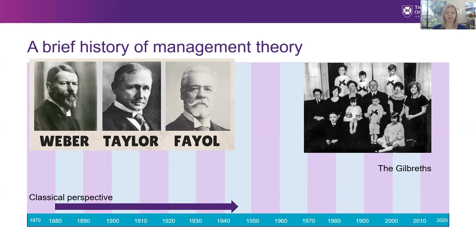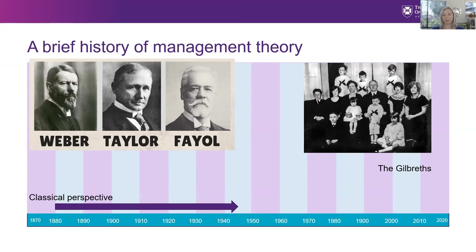Taylor's approach is illustrated by his observations of the movement of iron from rail cars and reloading finished steel at the Bethlehem Steel plant in 1898. Taylor calculated that with the correct movements, tools, and sequencing, each man was capable of loading 47.5 tons per day instead of the typical 12.5 tons. He also worked out an incentive system that paid each man $1.85 a day for meeting the new standard, an increase from the previous rate of $1.50 a day.